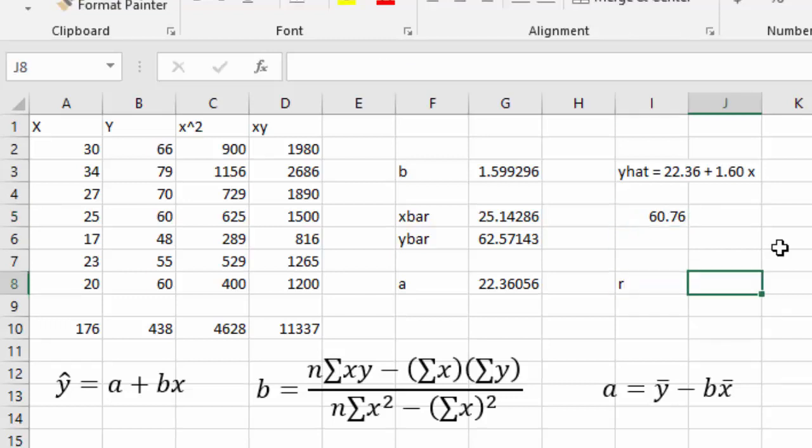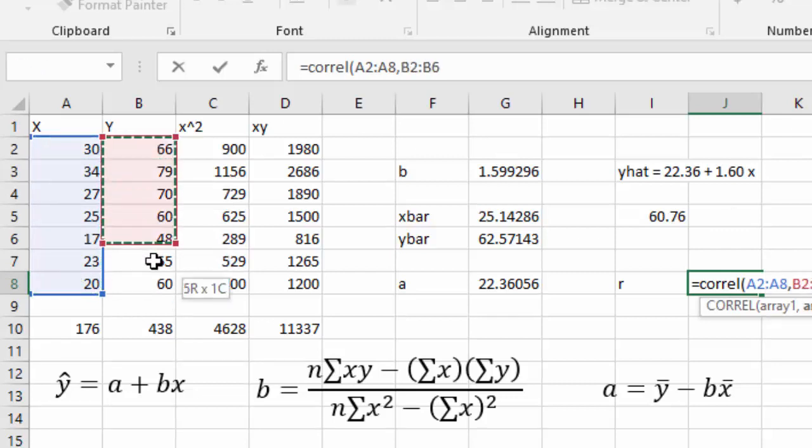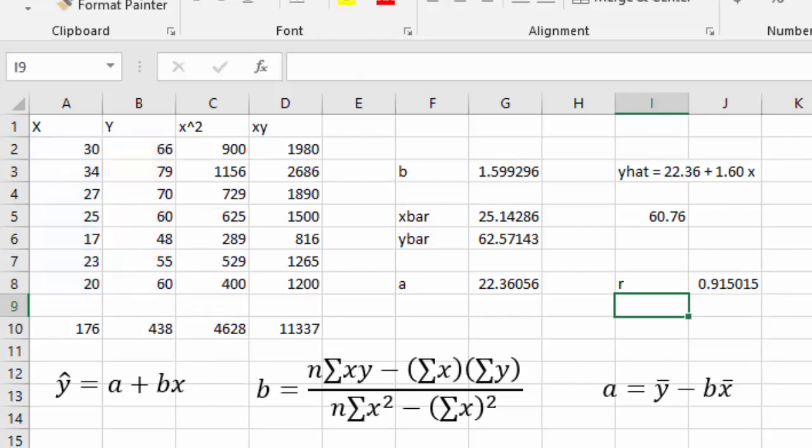We could calculate r as well, the correlation coefficient, to tell us how good of a line this is by selecting the x's comma and selecting the y's. And we see r our correlation coefficient is 0.9150. That r value tells us how good the line is at being close to the actual points.